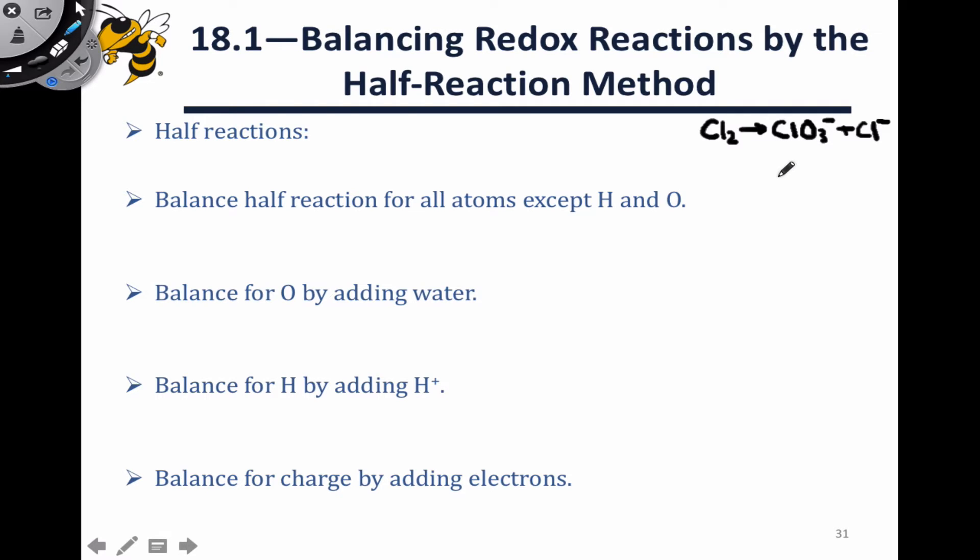So we sort of identified the half reactions on the last slide by noting that one of the chlorines undergoes oxidation and one undergoes reduction. The reduction half reaction here is the conversion of Cl2 to Cl-, while the oxidation half reaction is the conversion of Cl2 to ClO3-.